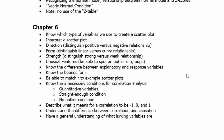Okay, for chapter six, know which types of variables we use to create a scatterplot. This goes into the conditions later on, because we use quantitative variables to produce a scatterplot. A scatterplot is bivariate quantitative, meaning you need two quantitative variables to produce a scatterplot.